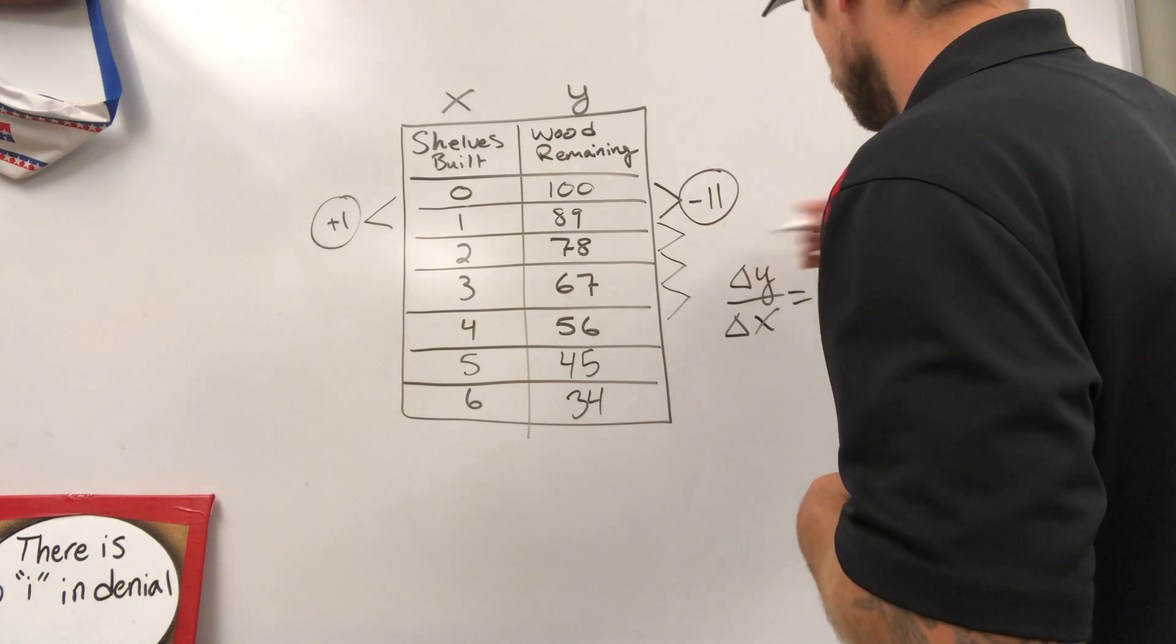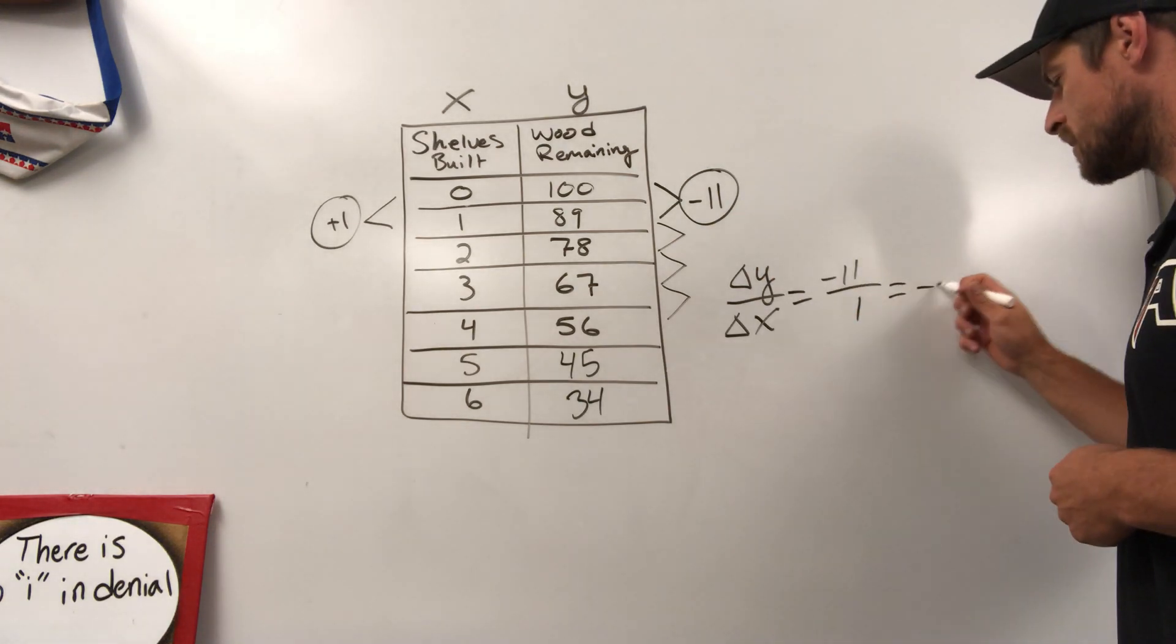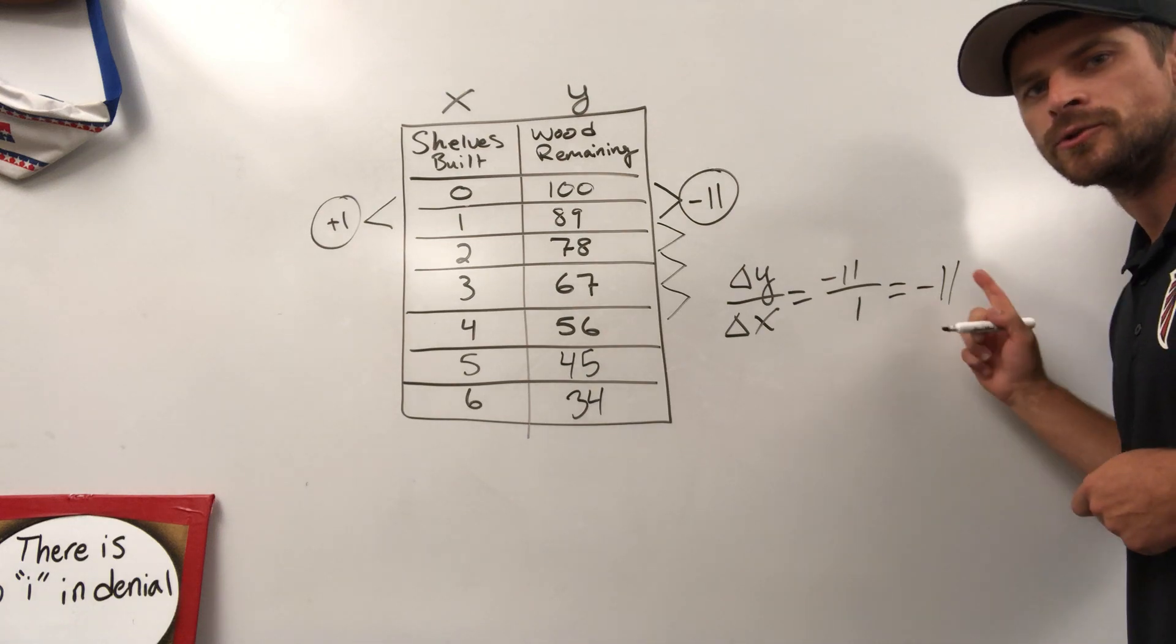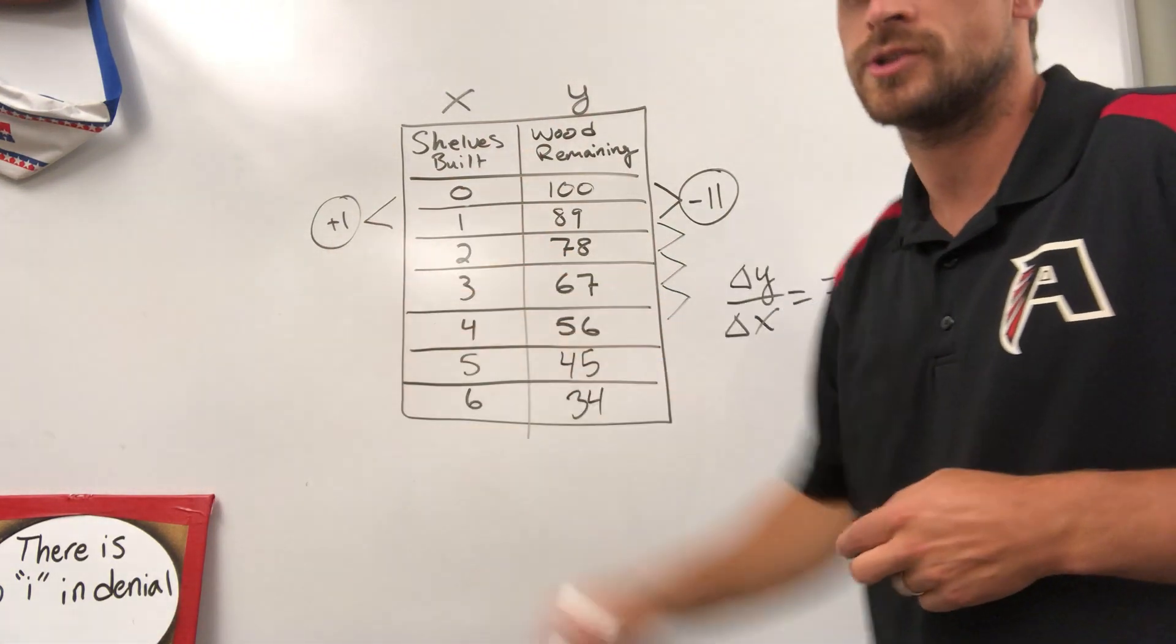And that would be negative 11 divided by one, which represents negative 11. We lose 11 pieces of wood every time we build one shelf.